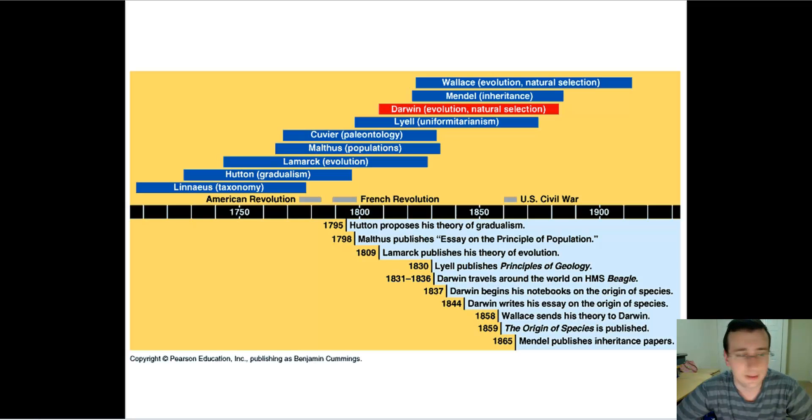Then came James Hutton, a very important father of geology, which also studied paleontology and came up with the idea of gradualism or the idea that the earth is old and changing throughout time. Then here comes the first biologist to come up with the theory of evolution or the fact that animals actually change over time.